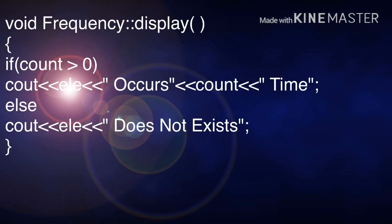So now we need to display the count value. Next, we are going to display the value. So this is the function where you are going to display the value. So if count is greater than 0, then it tells an element occurred so many times.